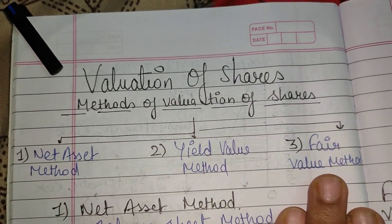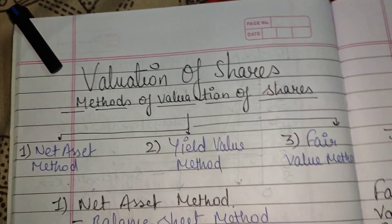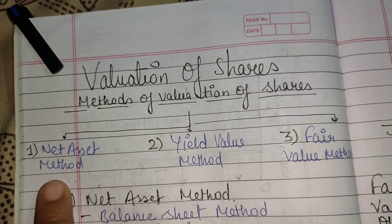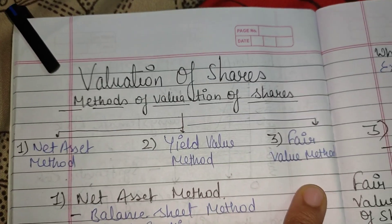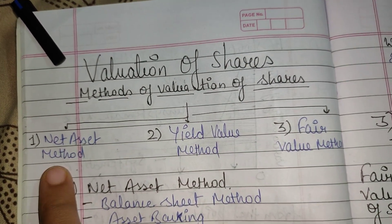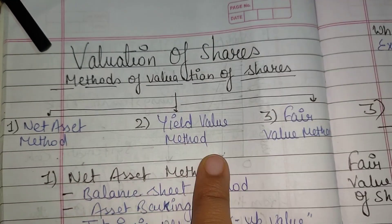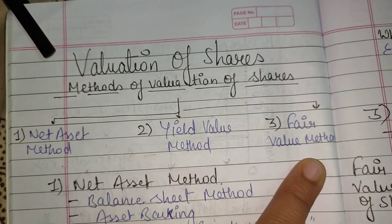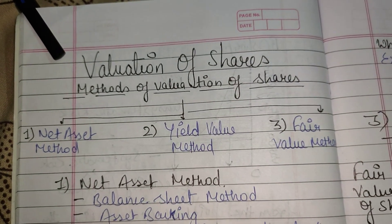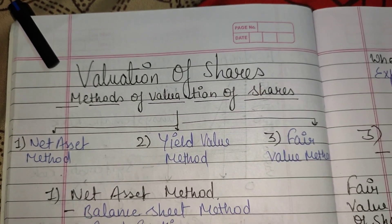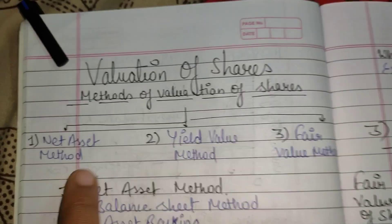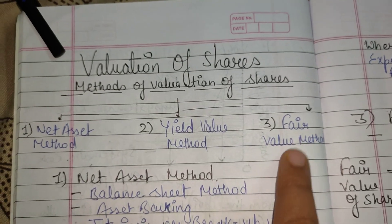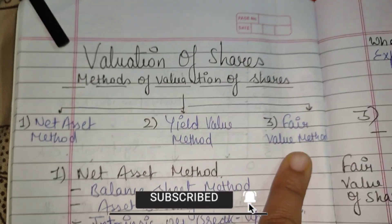We will study the formulae in the next video and solve them in the next video as well. There are three methods we are going to cover today. The first method is the Net Asset Method, the second is the Yield Value Method, and the third is the Fair Value Method.